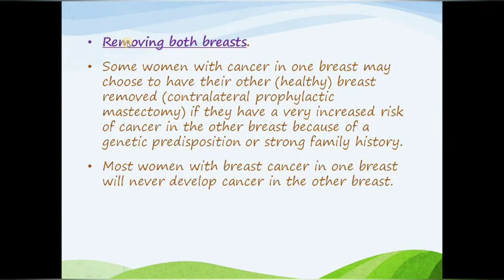The next option is removing both breasts. Some women with cancer in one breast may choose to have their other healthy breast removed — called a contralateral prophylactic mastectomy — if they have a very increased risk of cancer in the other breast due to a genetic predisposition or strong family history. Most women with breast cancer in one breast will never develop cancer in the other breast.